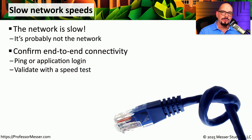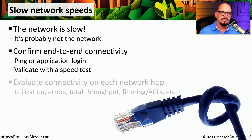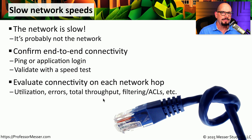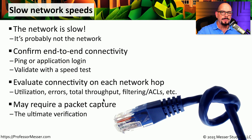An easy test would be to perform a ping from one end of the network to the other and evaluate the response times. You could also validate this by performing a speed test — if you get very good numbers, you probably are not having a significant network issue. You then might want to look at every hop along the way, evaluating network utilization, the number of errors, throughput through each connection, and whether there's any filtering, firewalling, or ACLs in place. Ultimately, you may need to take a packet capture from multiple points on the network to get undeniable information on whether the slowdown is on the network or with the application.